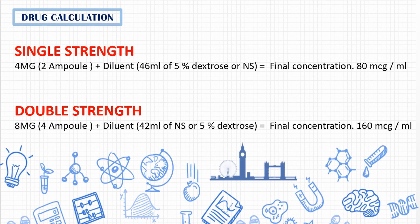For double strength, take 4 ampoules — that is, 8 mg of noradrenaline — with 42 ml of normal saline in a 50 ml syringe, giving a concentration of 160 mcg per ml. This may differ from hospital to hospital, but these are the most commonly used concentrations.